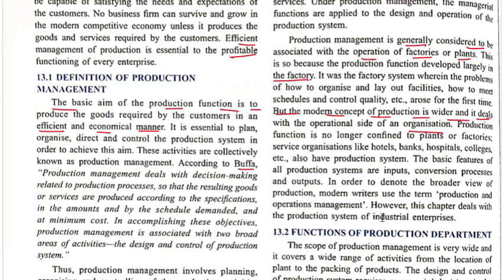The modern concept of production is wider and deals with the operational side of an organization. Production function is no longer confined to plants or factories — service organizations like hotels, banks, hospitals, colleges, etc., also have production systems. The basic features of all production systems are inputs, a conversion process, and output. Modern writers use the term 'production and operations management' to denote this broader view.